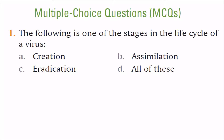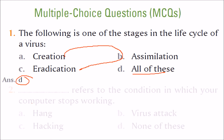The following is one of the stages in the life cycle of a virus. A virus is created, then it is assimilated, then eradication is done. So all of these is the correct answer, D.